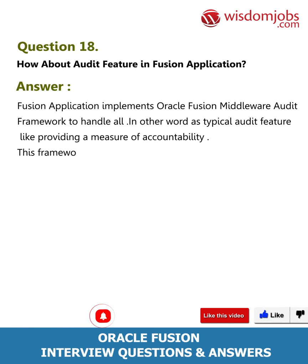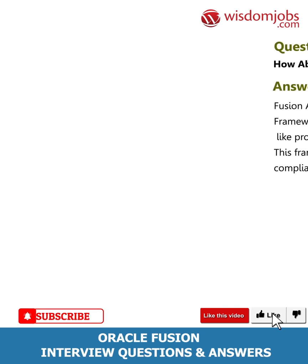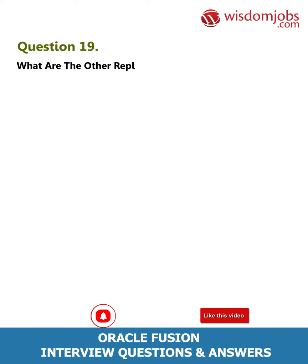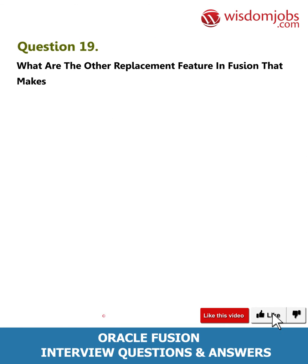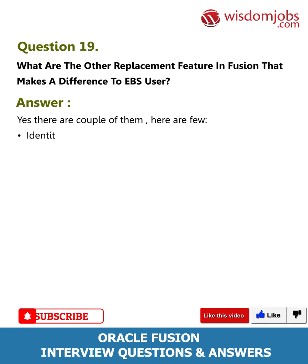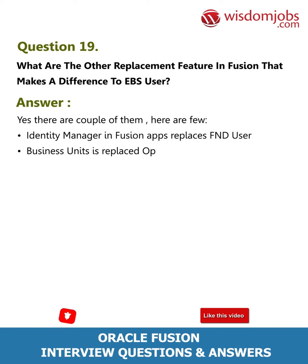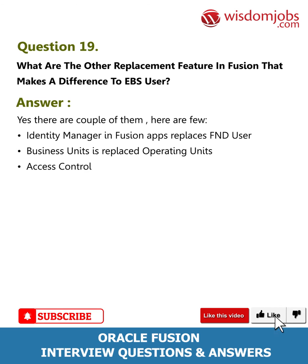Question 19: What are the other replacement features in Fusion that make a difference for EBS users? Yes, there are a couple. Identity Manager in Fusion Apps replaces FND User; Business Units replace Operating Units; Access Control Governor replaces OICM; and Date Effectivity replaces Date Track.